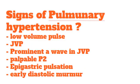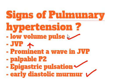What are the signs of pulmonary hypertension? The signs of pulmonary hypertension are low volume pulse, increased JVP, prominent A wave in JVP, palpable P2, epigastric pulsation, early diastolic murmur, and left parasternal heave.